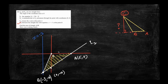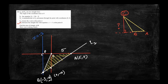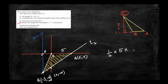In triangle AOB, if we consider the base as OA, its length is 5. The height is the perpendicular distance from point B to the line OA (extended), which is simply the y-coordinate of point B in absolute value, that is 16. So the area equals half times 5 times 16, which gives 40 square units. That is the area of triangle AOB.